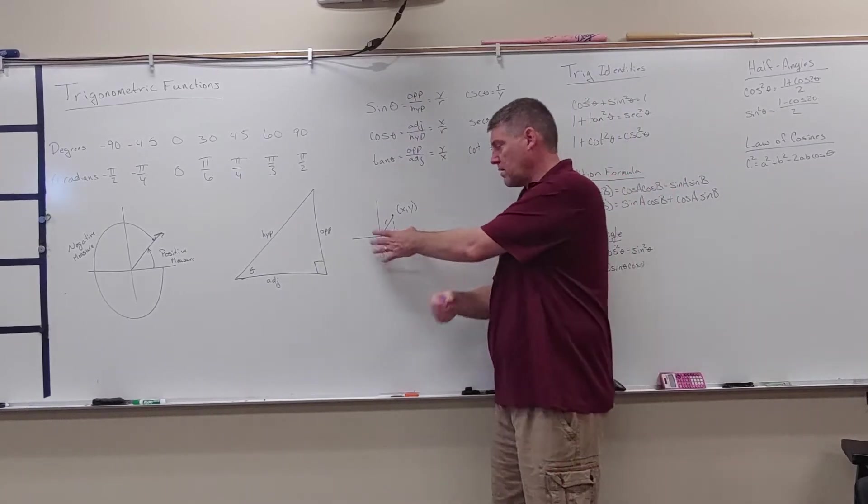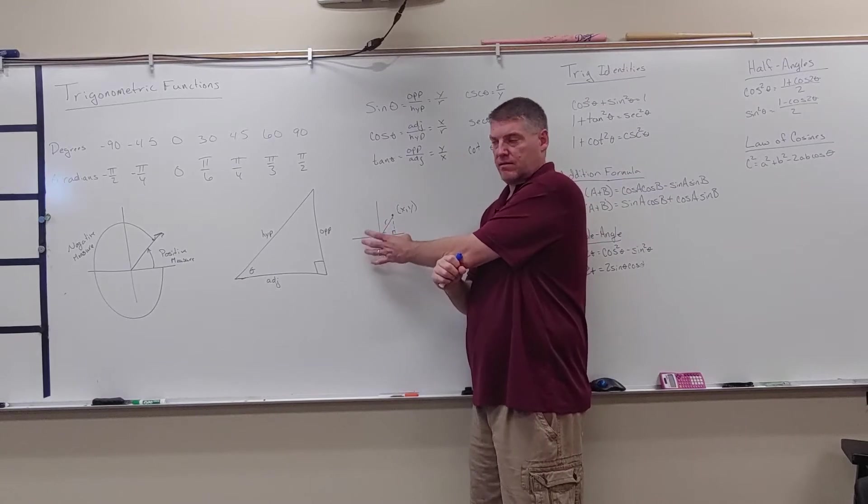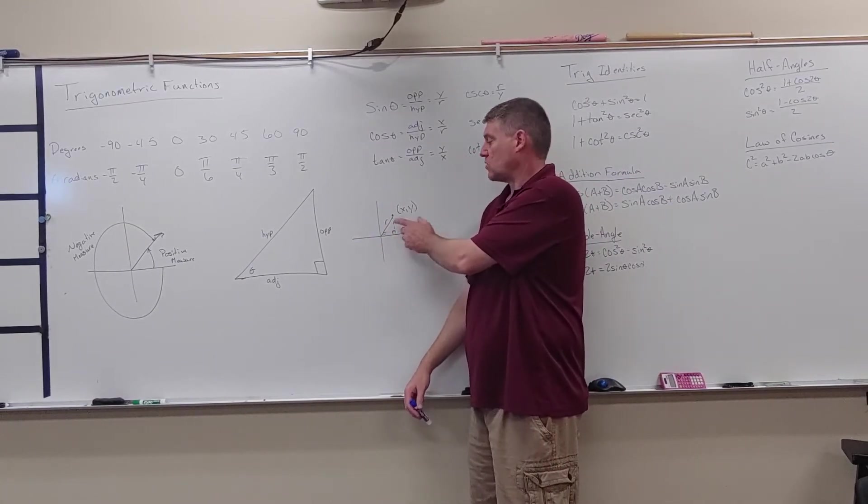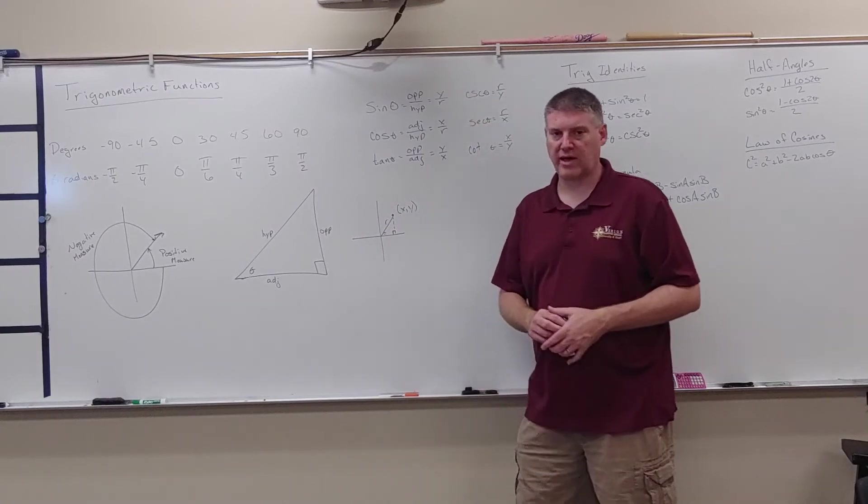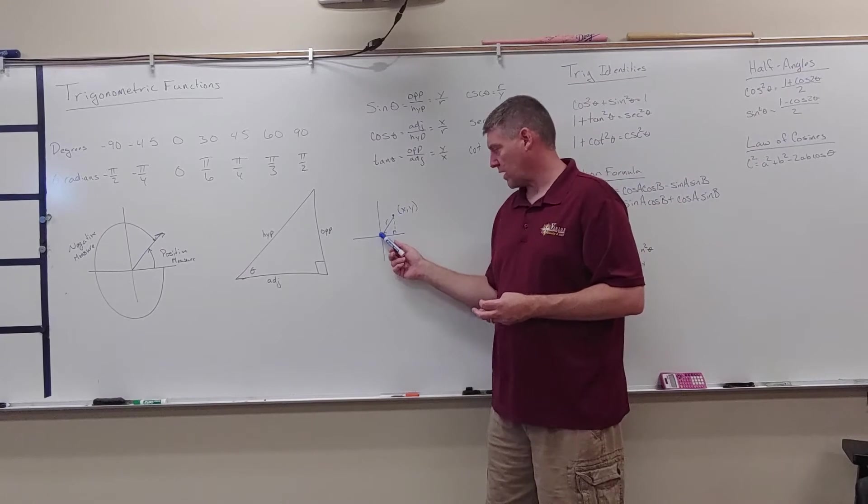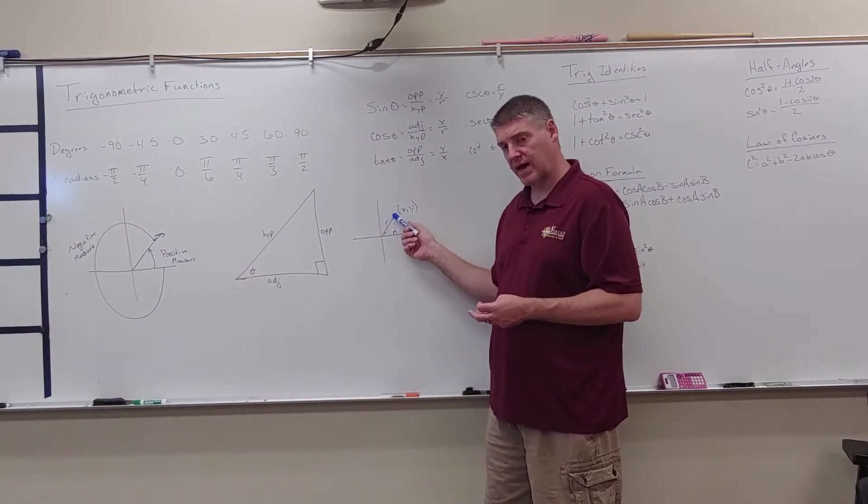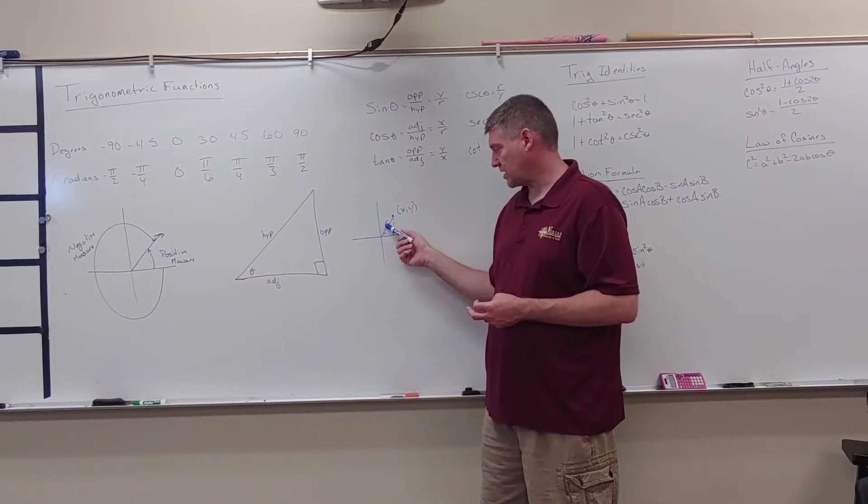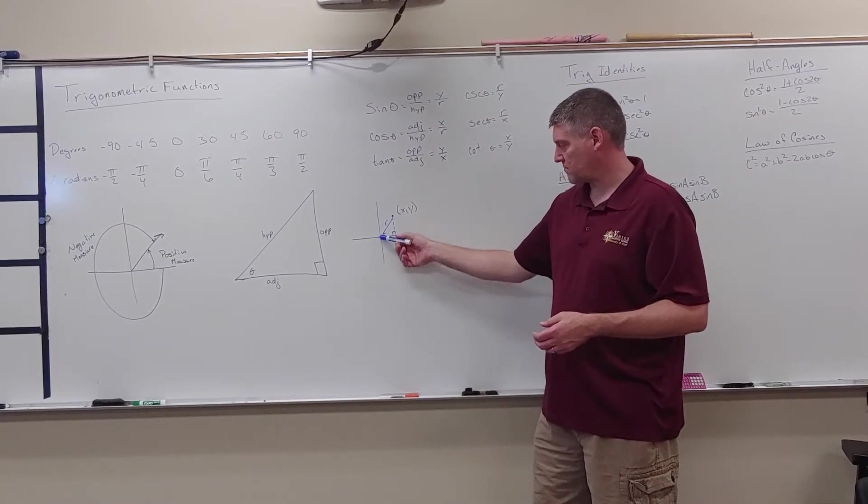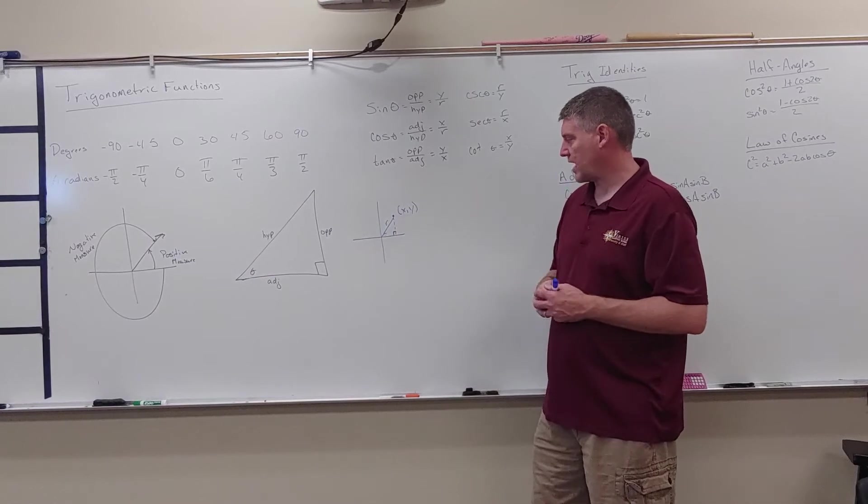What we want to be able to see is that we can use this based on the coordinate plane. When I put a point in the coordinate plane, I have an x-y coordinate. That x-y coordinate, I can also find the distance to that point from the origin, and I'm going to label that as r. That is that distance from the origin out to that x-y.